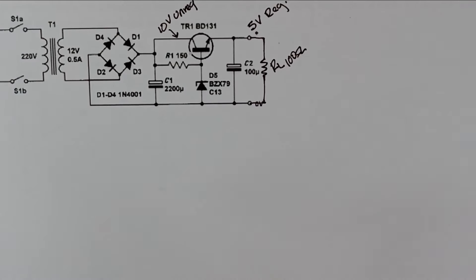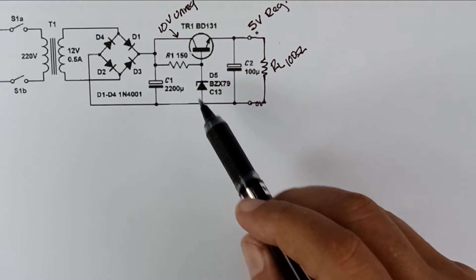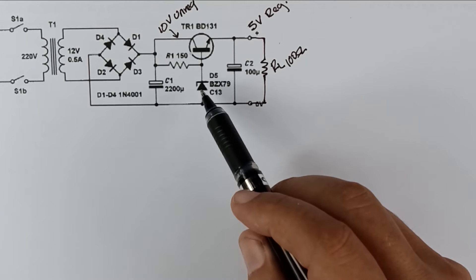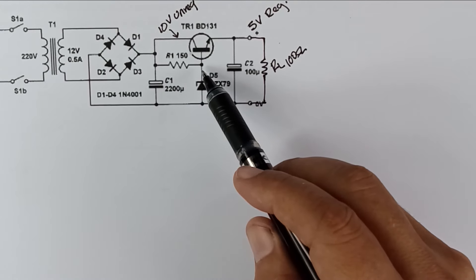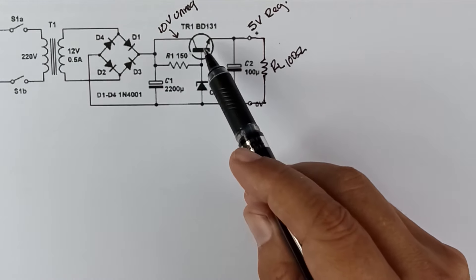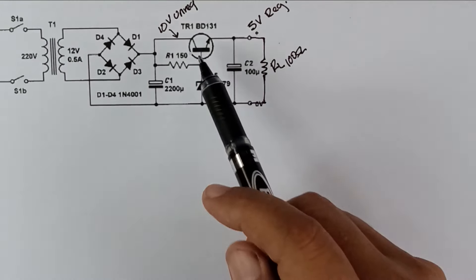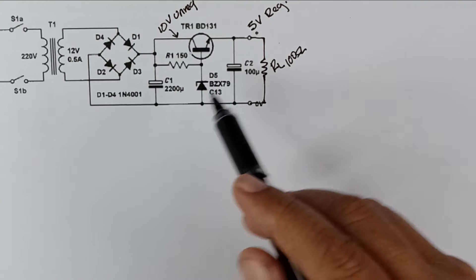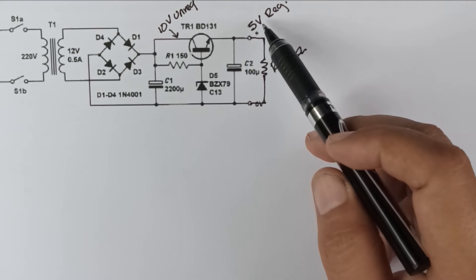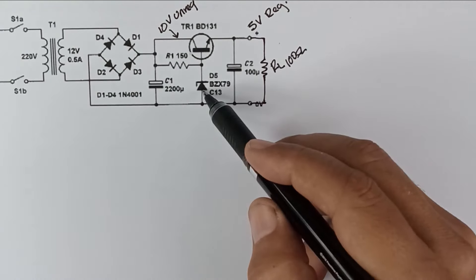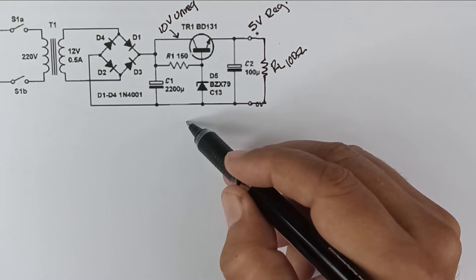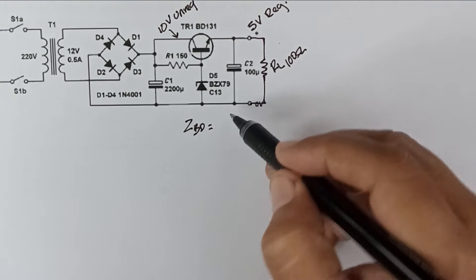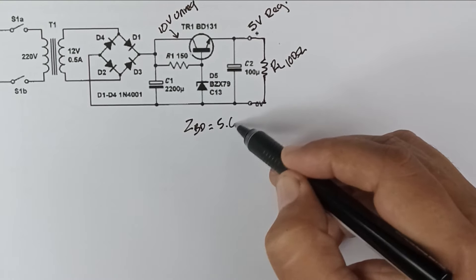How can I do that? The first thing that I need to do is select a Zener diode. The Zener diode in this case is acting as the reference voltage for the transistor. The transistor is basically a current amplifier. So if I want 5 volts on my output, I'm going to select a Zener diode whose breakdown voltage is equal to 5.6 volts.